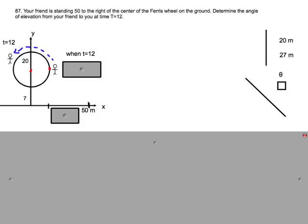Problem 87 says, your friend is standing 50 meters to the right of the center of the Ferris wheel on the ground. Determine the angle of elevation from your friend to you at time T equals 12.